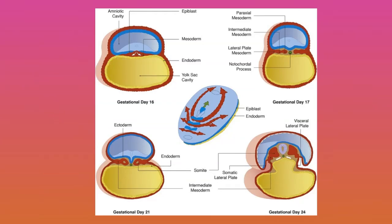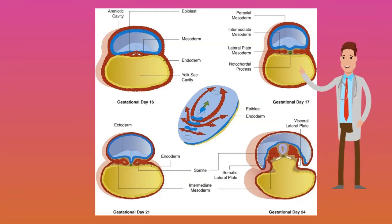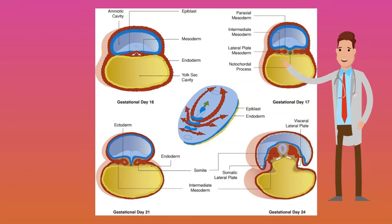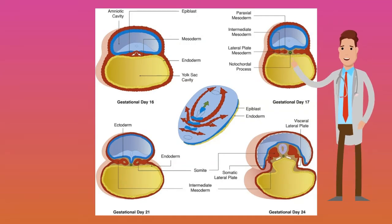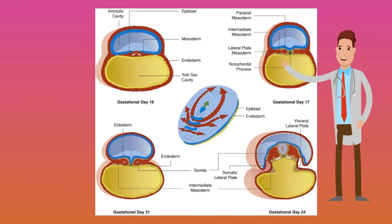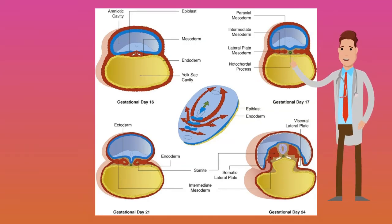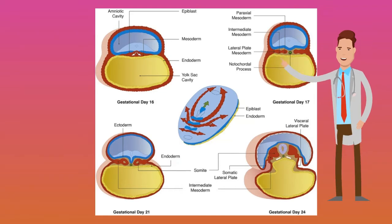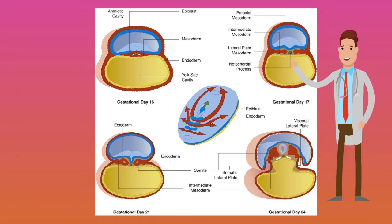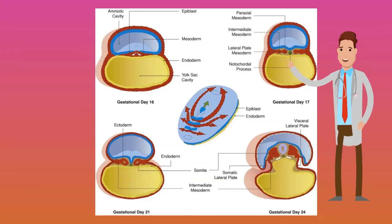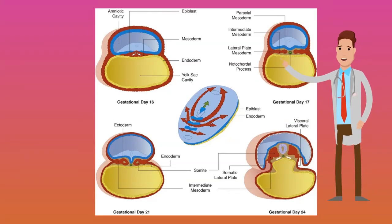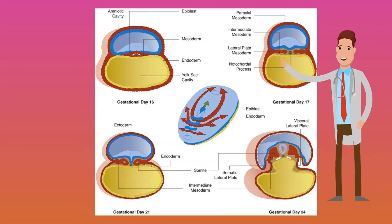Around 17 days, a small structure will start to drill between the two layers — the hypoblast and the epiblast. This is called the notochord. The notochord will cause activation of both epiblast and the hypoblast to form the endoderm, mesoderm, and ectoderm.